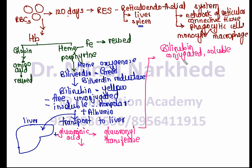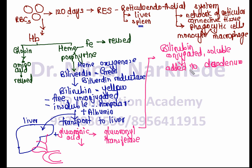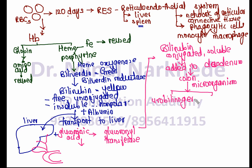By conjugation with glucuronic acid, insoluble bilirubin is converted into soluble bilirubin in the liver. This soluble conjugated bilirubin is then added to the duodenum via bile — it is first stored in the gallbladder and then released into the duodenum, the U-shaped part of the small intestine. From there it reaches the colon.